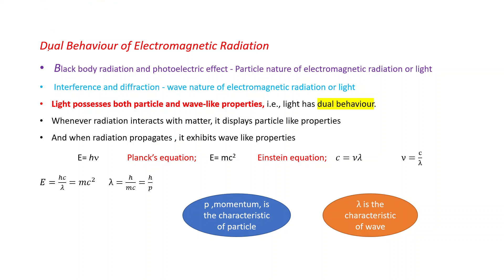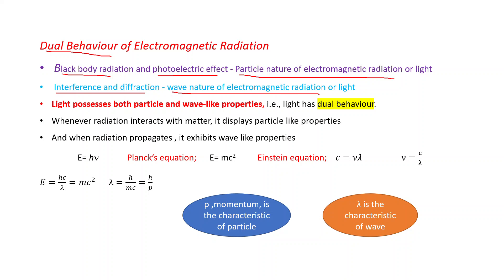First, let's discuss the dual behavior of electromagnetic radiation. Black body radiation and photoelectric effect can be explained on the basis of particle nature of electromagnetic radiation, given by Planck. Interference and diffraction can be explained on the wave nature of electromagnetic radiation, given by Maxwell. That's why we say light possesses both particle and wave-like properties — light has dual behavior.